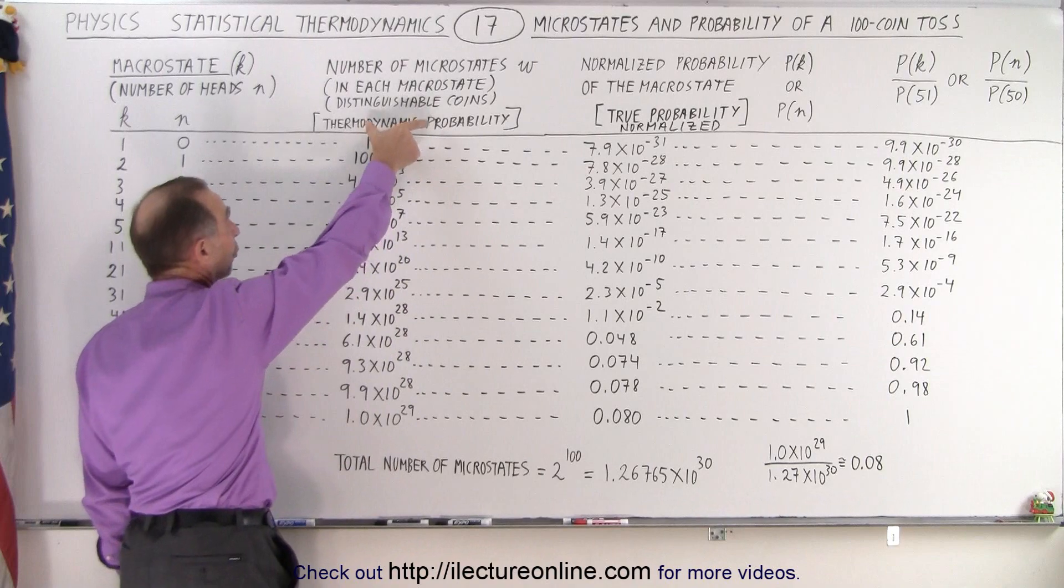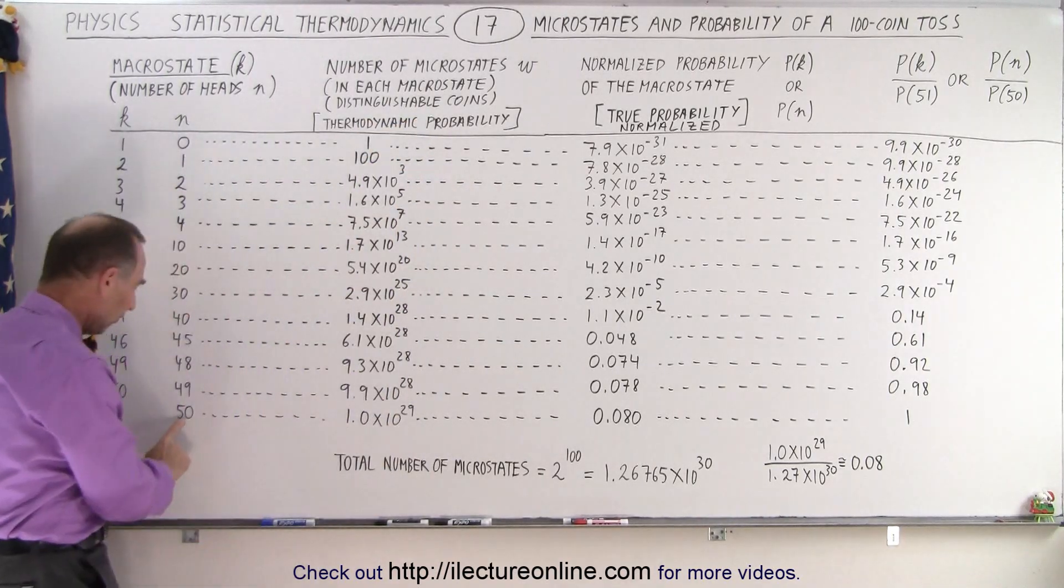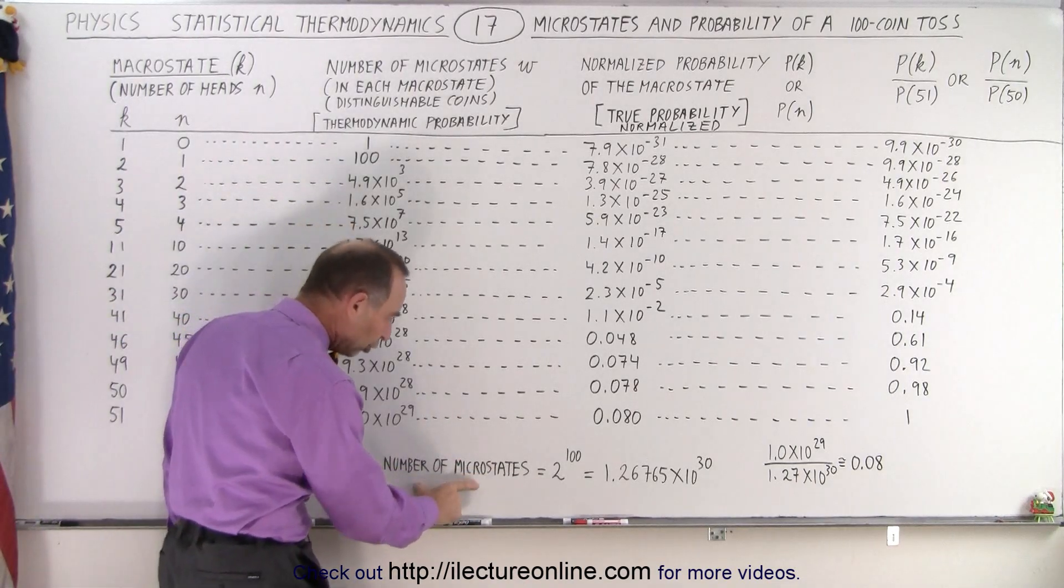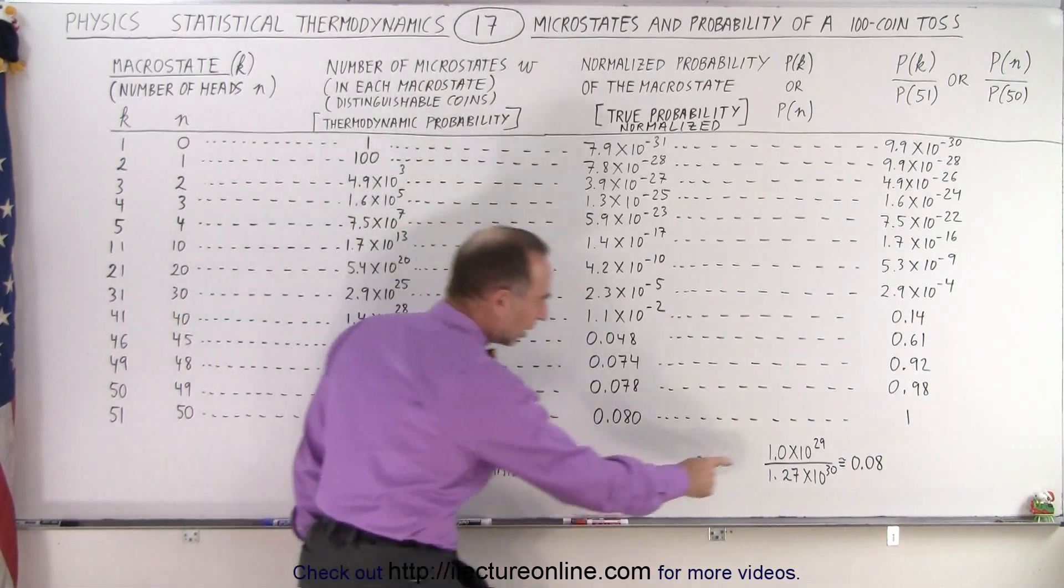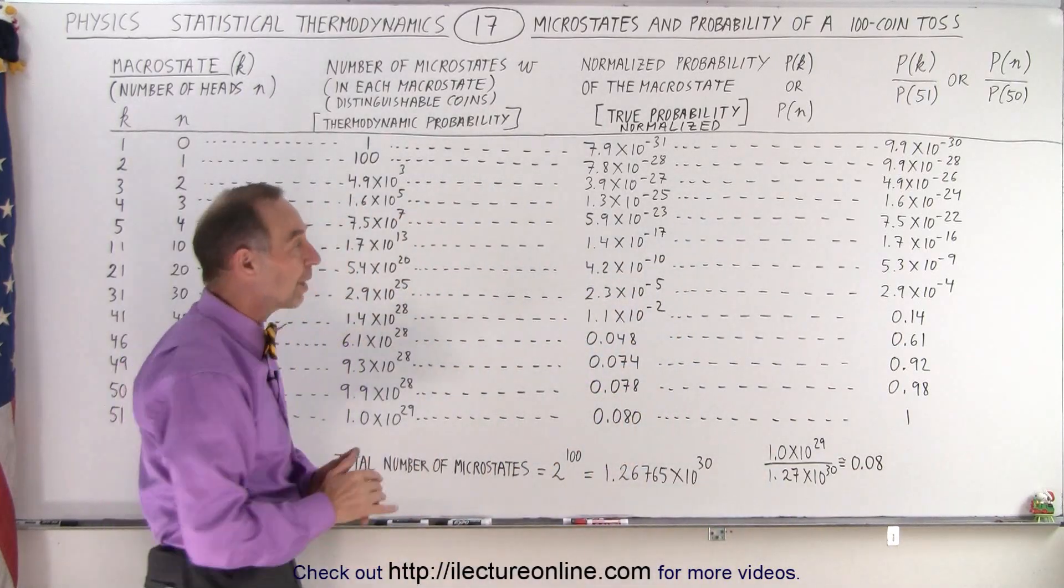So if you take this, what we call thermodynamic probability of 1 times 10 to the 29 for 50 heads, and we divide that by the total number of microstates, that's how you end up with the 0.08. That's what we call the normalized probability.